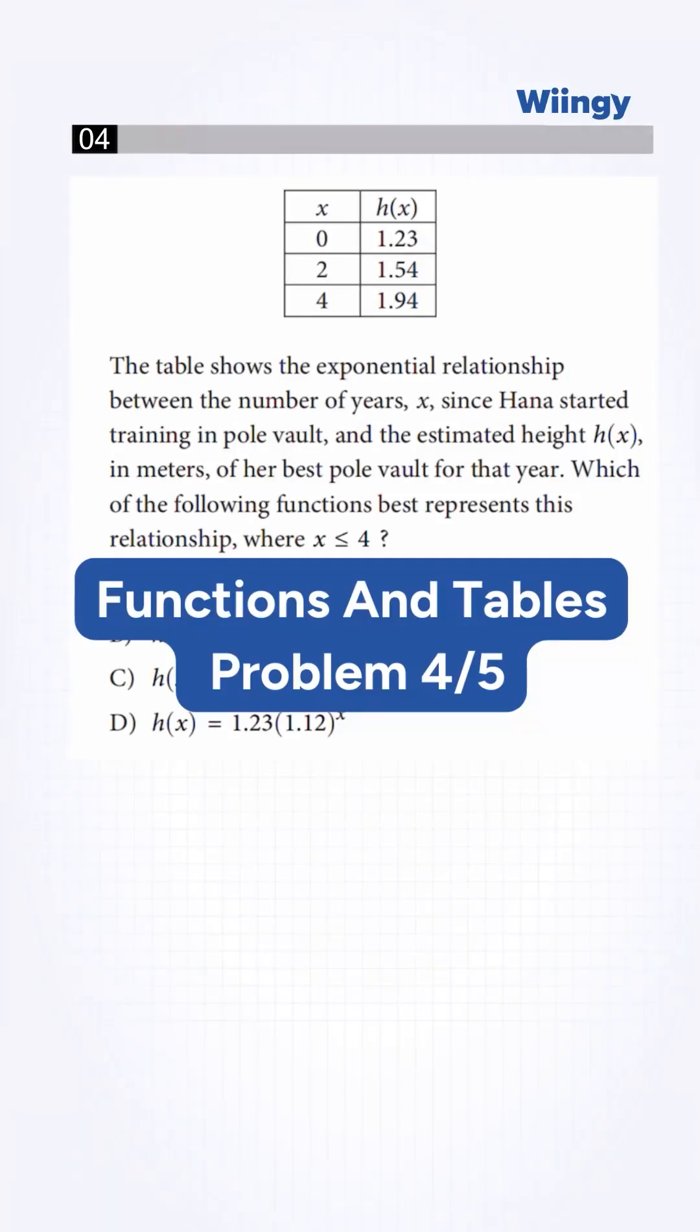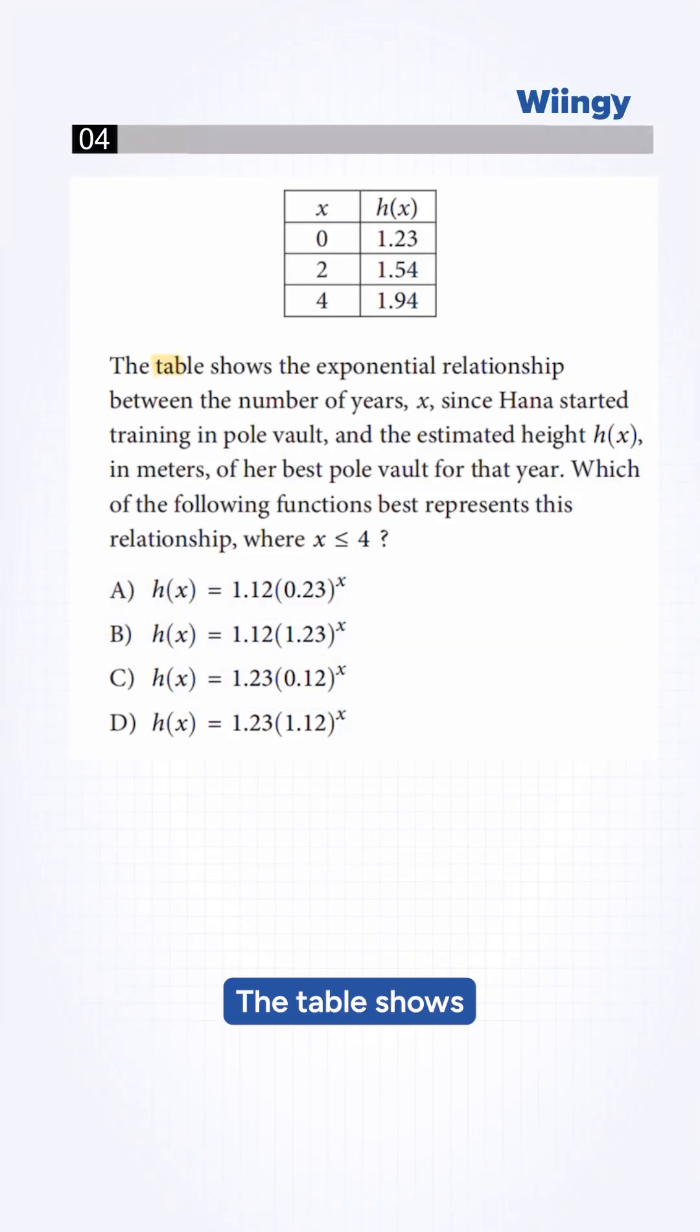You might need a calculator to solve this SAT math problem. The table shows the exponential relationship between the number of years, x, since Hannah started training in pole vault, and the estimated height h(x) in meters of her best pole vault for that year. Which of the following functions best represents the relationship where x is greater than or equal to 4?